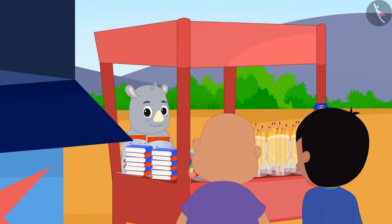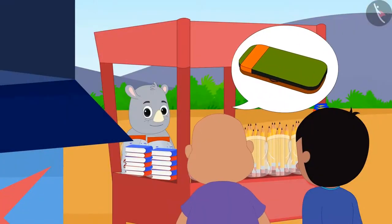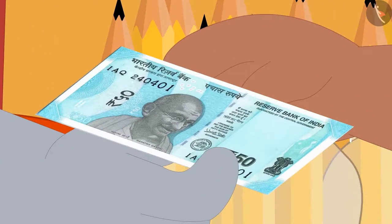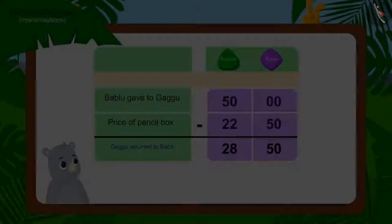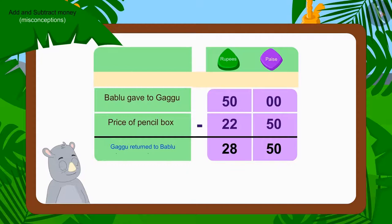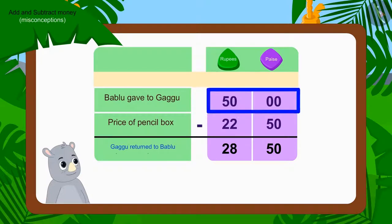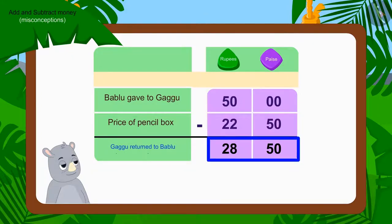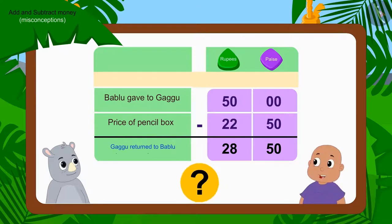Now Bablu asked for one pencil box from Gaggu and gave a 50 rupee note. Gaggu deducted 22 rupees 50 paise of the pencil box from 50 rupees and returned 28 rupees 50 paise. Children, has Gaggu returned the right amount to Bablu?